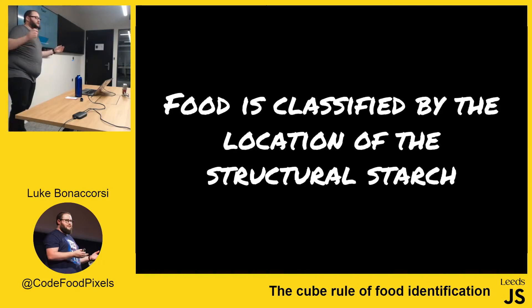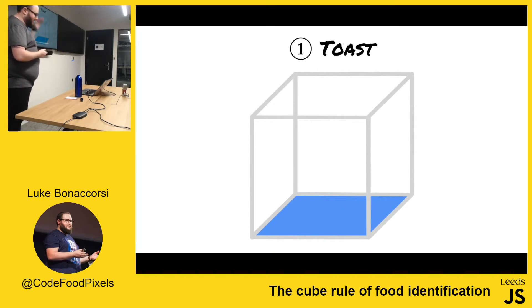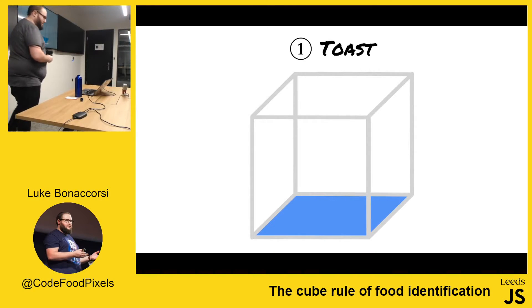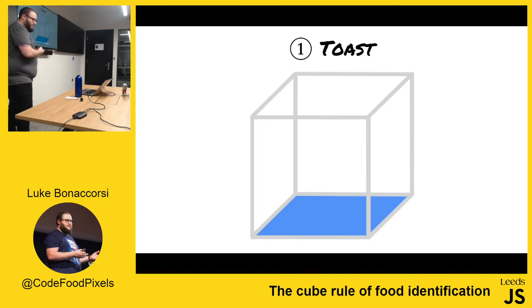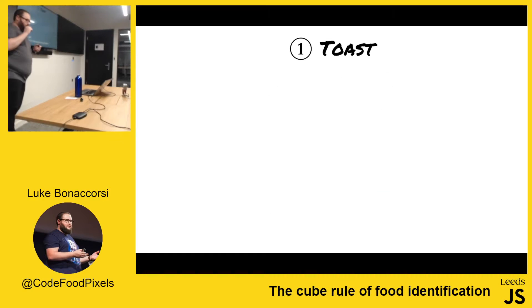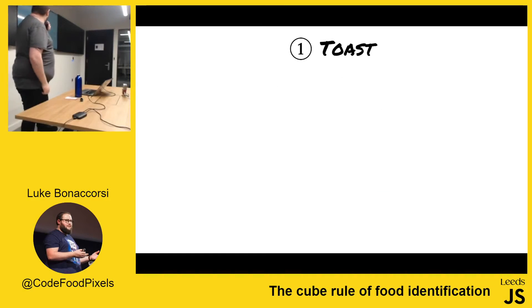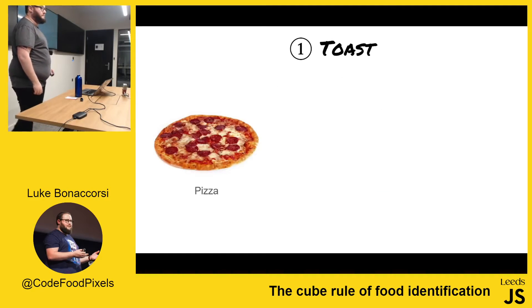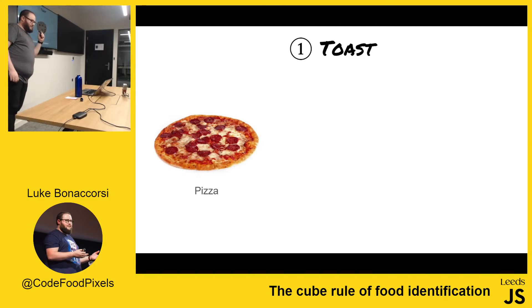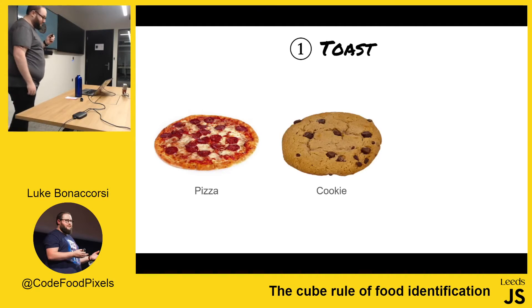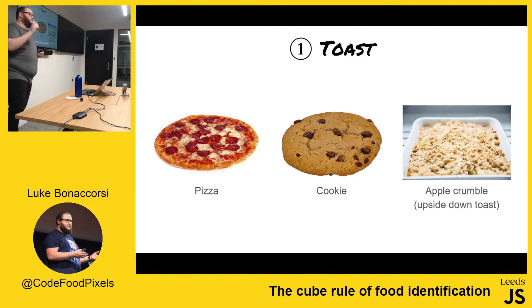First up, we have toast. This is defined by one piece of structural starch on one side. So examples of toast are pizza, cookies, and apple crumble, which is upside down toast.